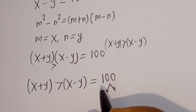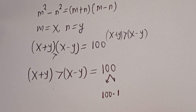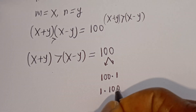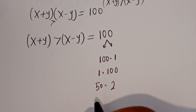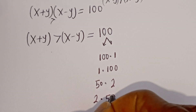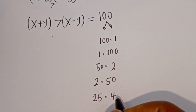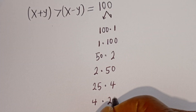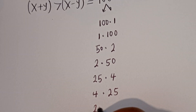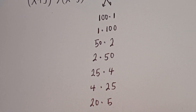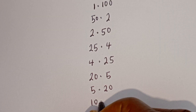100 is a product of: 100 × 1, 1 × 100, 50 × 2, 2 × 50, 25 × 4, 4 × 25, 20 × 5, 5 × 20, and 10 × 10.